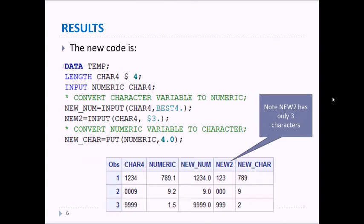The results are shown below. Notice we entered the new line of code NEW2=INPUT(CHAR4,$3.) and we got the column called NEW2 that is the first three characters of CHAR4.